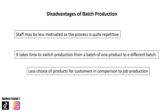Disadvantages of batch production: staff may be less motivated as the process is quite repetitive, and workers may start to feel bored, which may lead to quality issues. It also takes time to switch production from one batch to another, machinery may need to be reset adding time and cost, and output may be reduced. There is also less product choice for customers compared to job production.